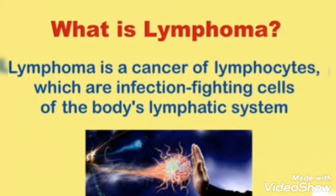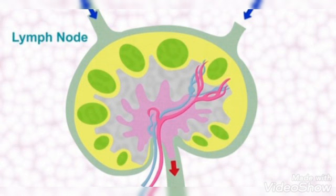At the time of infection, especially viral infections like Epstein-Barr virus or HIV, the infection gets trapped into the lymph nodes. In this picture, the pink portion of the lymph node is the medulla, which contains sinuses, blood vessels, and medullary cords. These medullary cords contain antibody-secreting plasma cells.